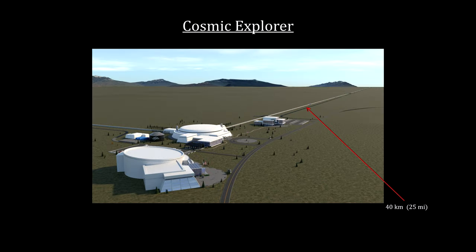Another is the Cosmic Explorer. Its design features 40 kilometer arms, that's 25 miles. This length will enable the detection of millions of gravitational waves per year. It is also planned for operation in the 2030s.